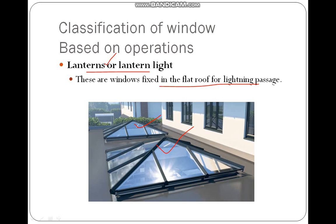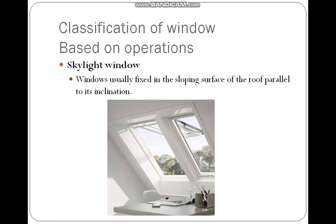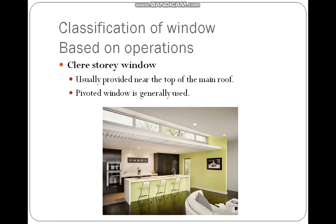The skylight window is usually fixed in the sloping roof parallel to its inclination. It can be opened to allow air in and is very useful in pitched-roof buildings. The clerestory window is provided near the top of the main roof — in the space between the main roof and a lower side roof. Pivoted windows, which are hinged at the middle, are commonly used as clerestory windows. This type increases the appearance of the building and allows natural light inside.